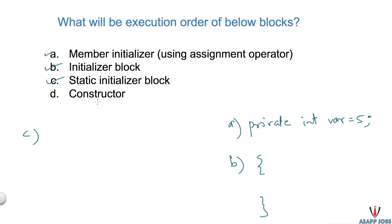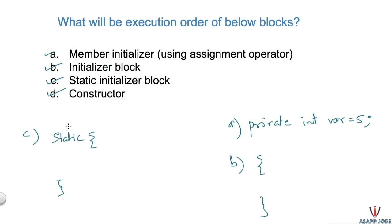A static initializer block is very similar to an initializer block. The only difference is it has the static keyword in its signature, and we can only initialize static member variables or call static methods inside it. Last but not least is the constructor, which gets called whenever we initialize any object.